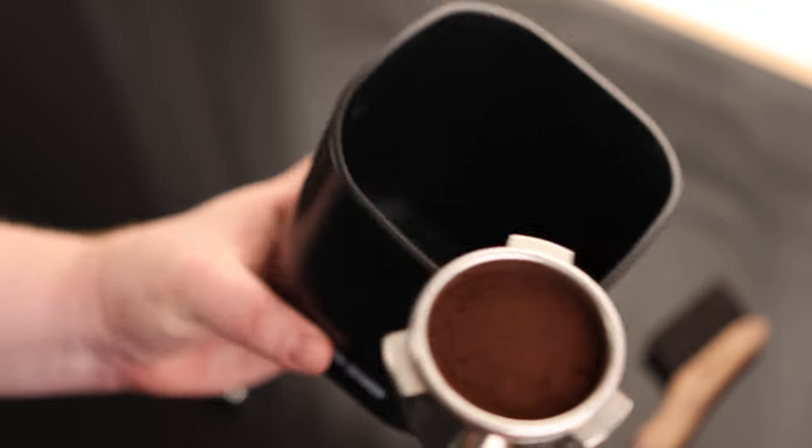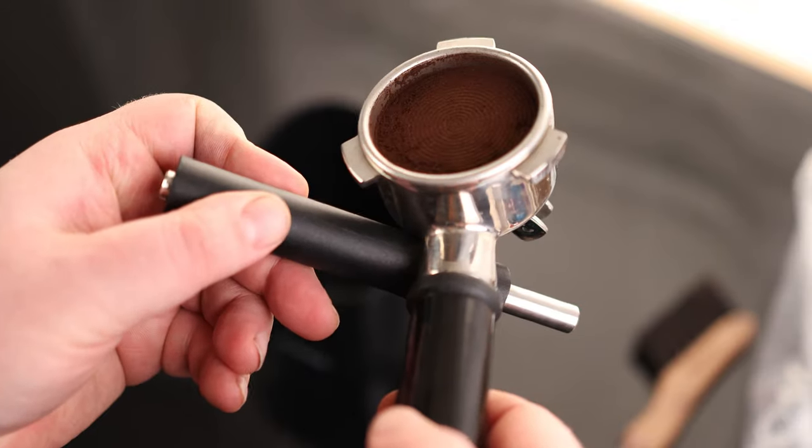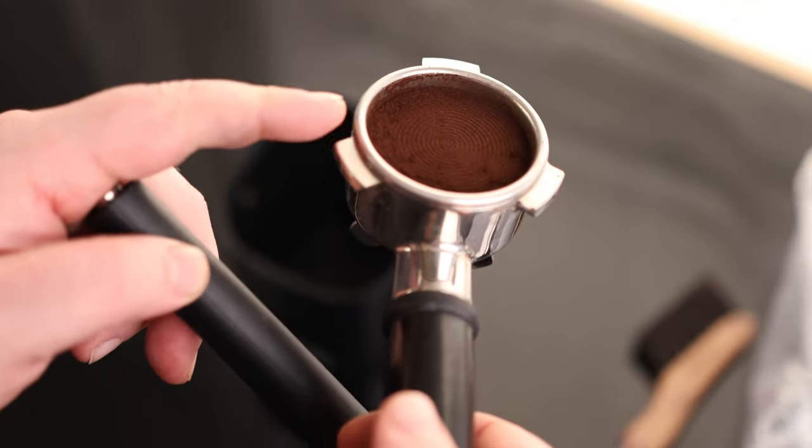So what that means is whenever you're going to be emptying your portafilter, you can slam that either directly on the bar, or you can hit that right on the handle, and you wouldn't even have to worry about making contact with that ceiling head.